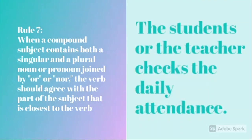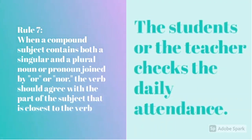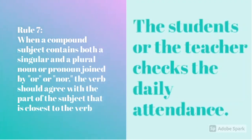Rule 7, also known as the proximity rule, is when a compound subject contains both a singular and a plural noun or pronoun joined by or or nor, the verb should agree with the part of the subject that is closest to the verb. An example is, the student or the teacher checks the daily attendance. Here, teacher is closest to the verb, so the verb agrees with it.